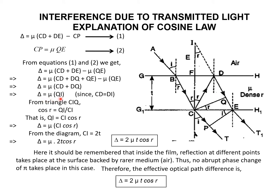So delta equals mu times IQ. From triangle CIQ, cos r equals adjacent side by hypotenuse, which is QI by CI. Therefore QI equals CI times cos r. From the diagram, CI equals 2T, where T is the thickness of the thin film. So delta equals mu times CI times cos r, and substituting CI equals 2T, delta equals 2 mu T cos r, which is the cosine law.